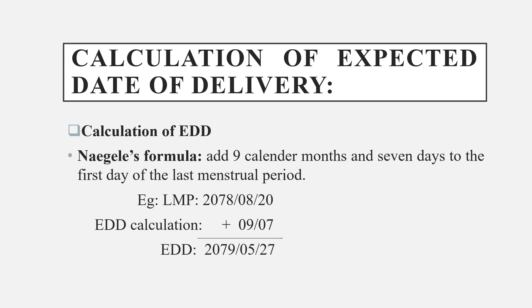We will see this example. LMP is 2078-8-20. We need to do the EDD calculation: add 9 months and 7 days. So EDD is 2079-5-27, because 20 plus 7 equals 27.